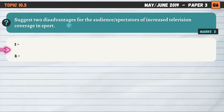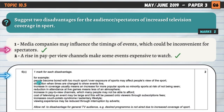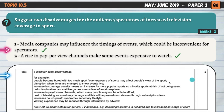Suggest two disadvantages for the audience or spectators of increased television coverage. The impact of the media isn't all positive — media companies may influence the timings of events, which could be inconvenient for spectators; there's a big demand to show games at prime time in the evening, meaning many matches are played late, which isn't great for those wanting to watch live. And a rise in pay-per-view channels makes some events expensive to watch — another negative for spectators.